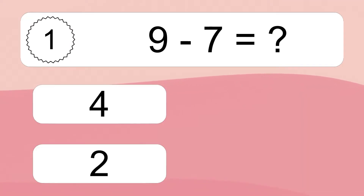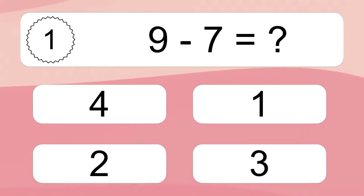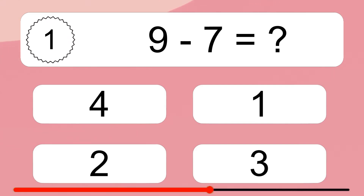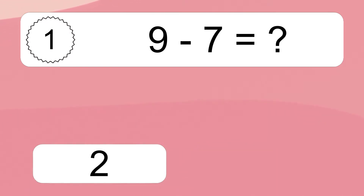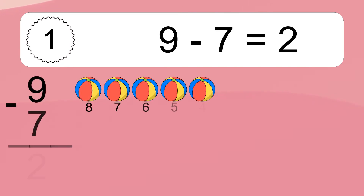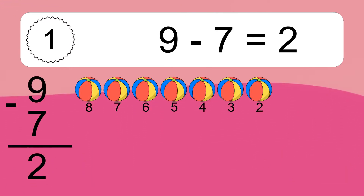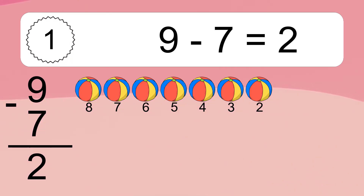9 minus 7 equals what? 9 minus 7 equals 2. Let's count it: 8, 7, 6, 5, 4, 3, 2.